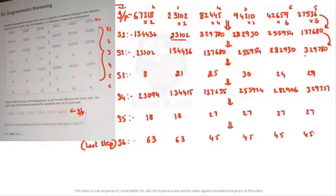2,30,102 is the smallest number, arranged first. Next smallest is 1,34,436, then 1,37,000, then 255, then 282, then 329. Now if you observe, there are some very big numbers and suddenly they drop down to a single digit or two-digit number. What would have happened from step two to step three?